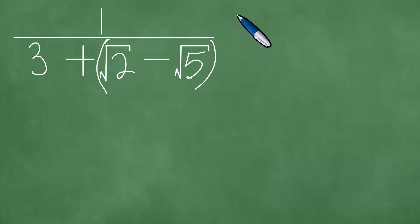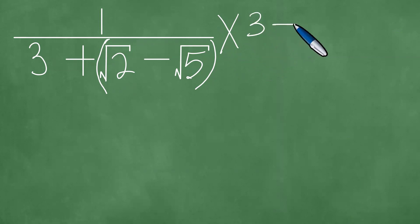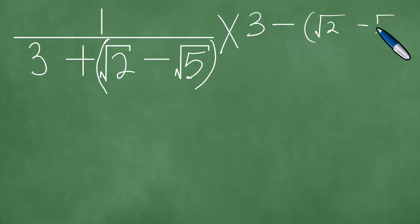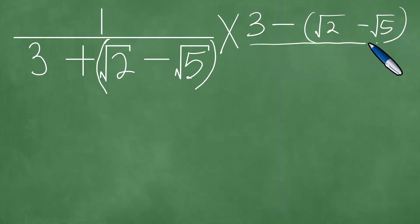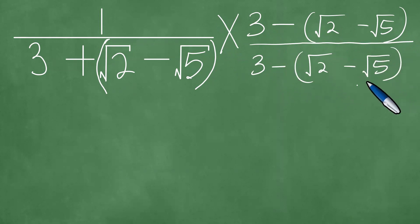We rationalize the denominator by multiplying by the conjugate. The conjugate is 3 minus the quantity square root of 2 minus the square root of 5, and you proceed to divide by 3 minus the square root of 2 minus the square root of 5.